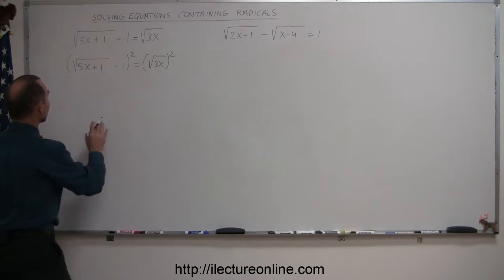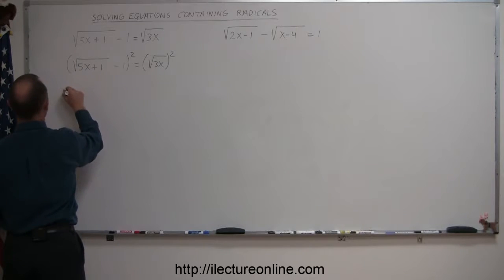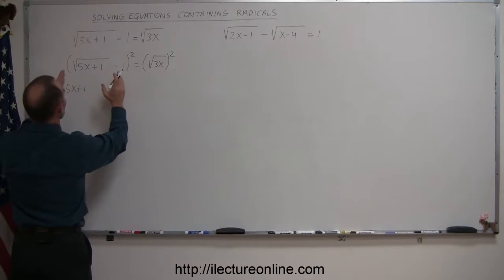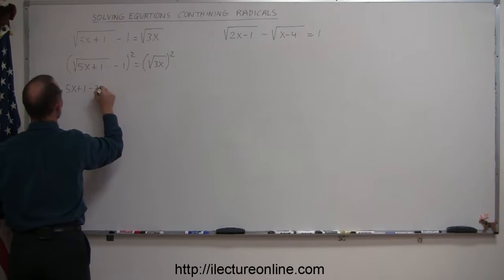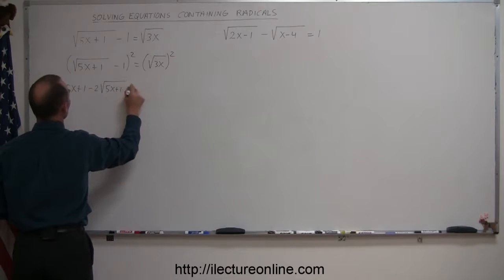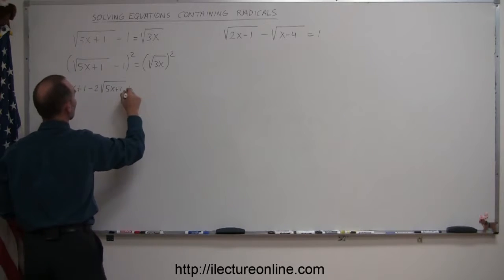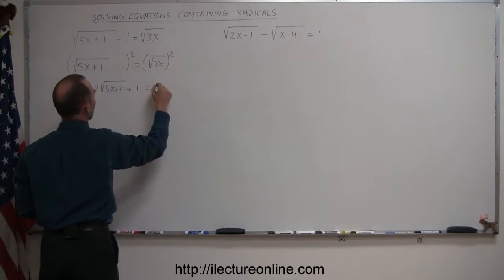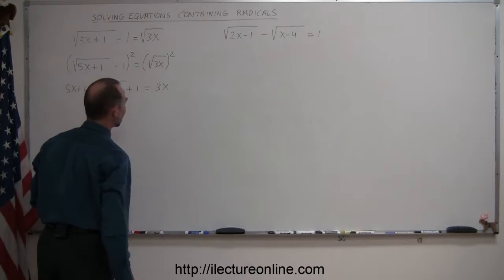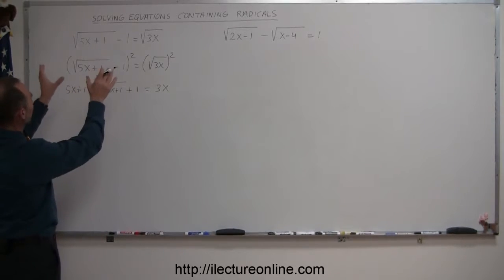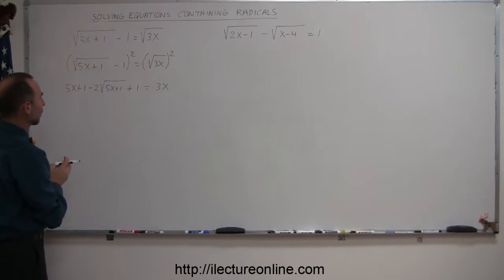Squaring the left side, we get 5x plus 1 — because this squared gives me 5x plus 1 — times twice the product of the two, which is minus 2 times the square root of 5x plus 1, plus the square of the last term, which is positive 1. That equals 3x on the right side. So by squaring both sides, we've gone from two radicals down to just one radical.